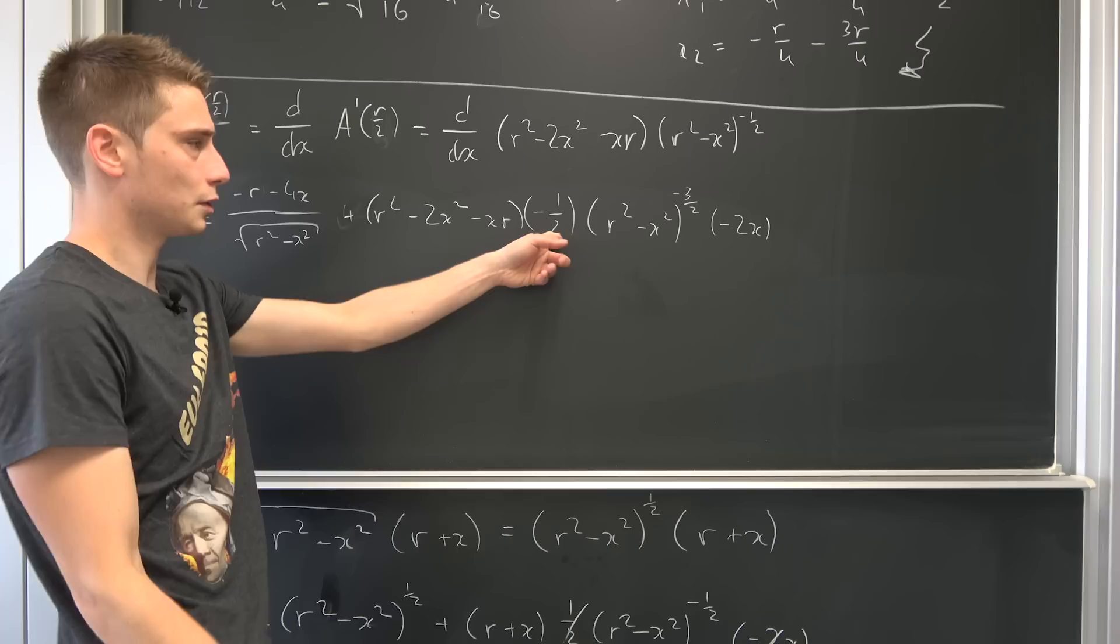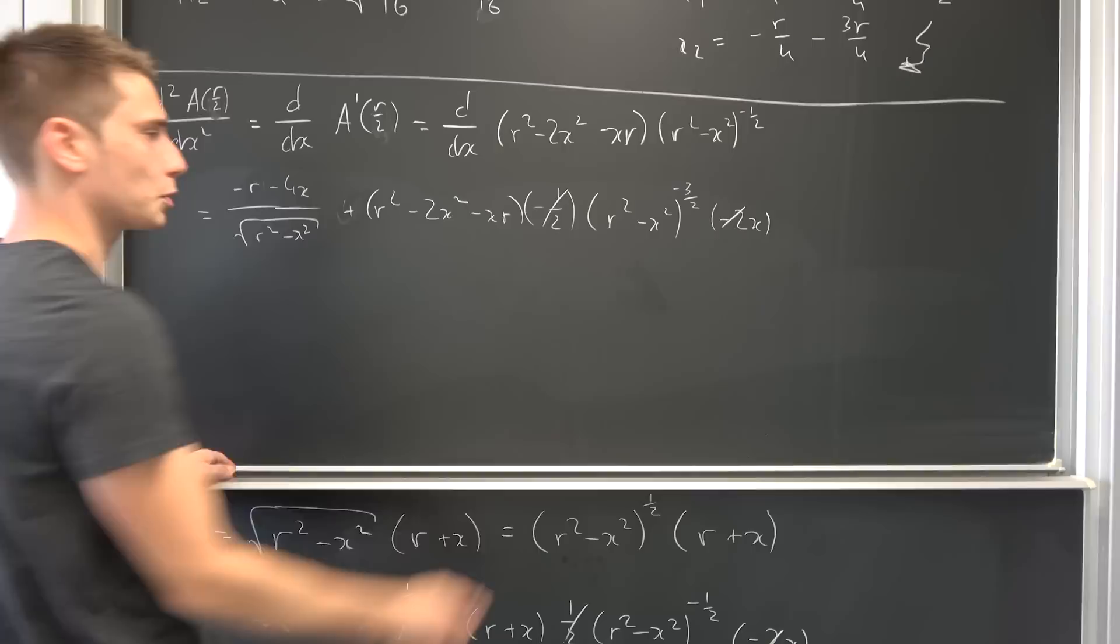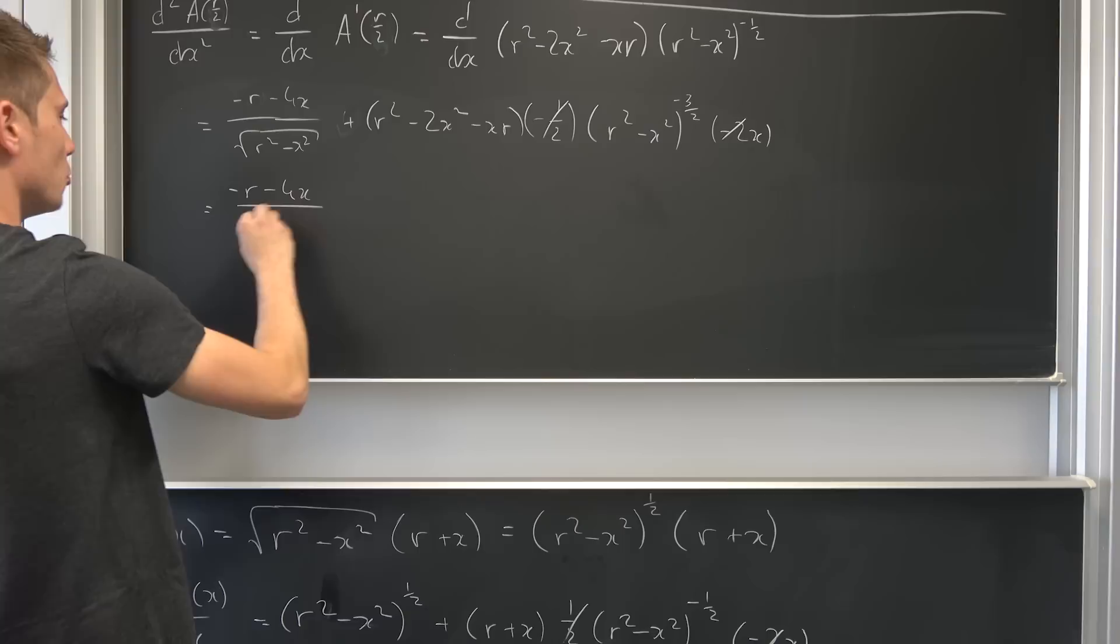So this and that is going to cancel out now and we can multiply this with this right here. So we end up with negative r negative 4 times x over square root r squared negative x squared. And then we have, this is positive now.